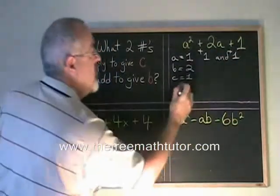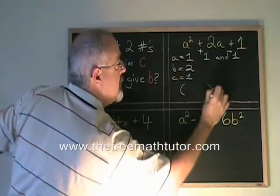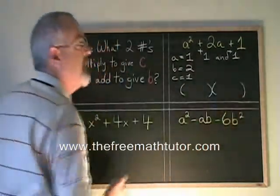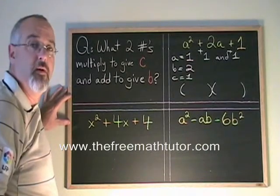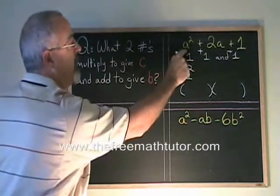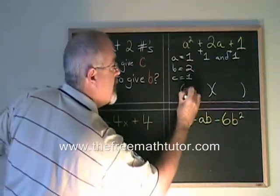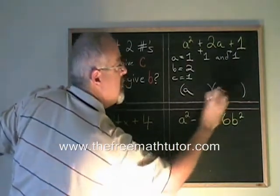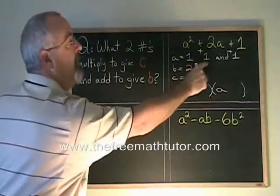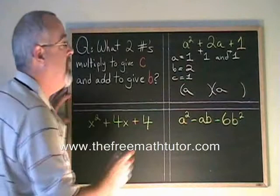Then I write two sets of brackets because the factoring of a simple trinomial will always be 2 binomials. The square root of the first term goes in the first position in each. And then I write the numbers that I found, plus 1 and plus 1.